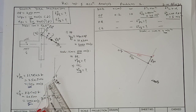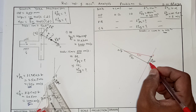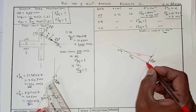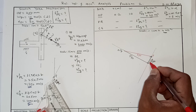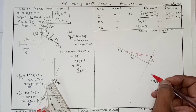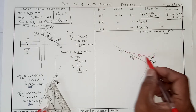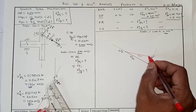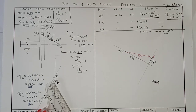Always remember that when adding vectors, we place tail to head so that they get added. FC_PO plus FT_PO gives the total acceleration of P relative to O, with the arrow directed towards P. The next vector is FS_PQ, the sliding acceleration of P relative to Q, which is vertical.